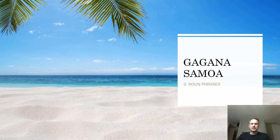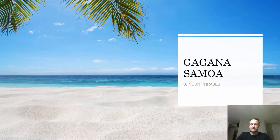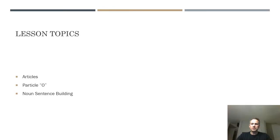Hey everyone, it's Jacob again. Today's video is about what I'm calling noun phrases, and this is the first video that I'm making that really talks about building simple sentences in Samoan — sentences that are basically all about nouns, really comparing nouns together. We'll be talking about articles, and if that's not familiar to you, that's the English equivalent of 'the,' 'a,' or 'an' — those little words that come right before nouns. We'll also be talking about something called the particle 'o,' and then combining those together to create sentences. The objective of all these videos is to give you the grammar and sentence structure to start building sentences on your own.